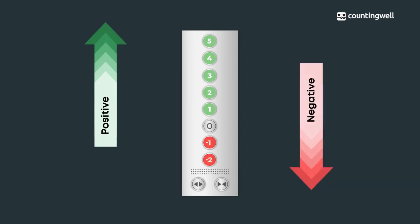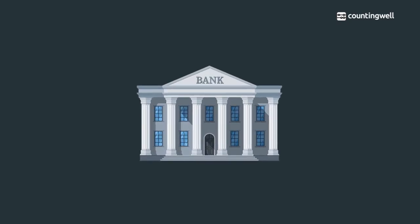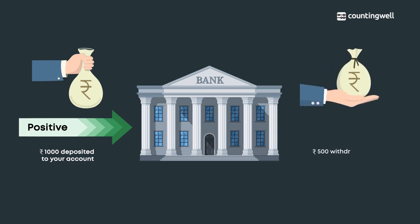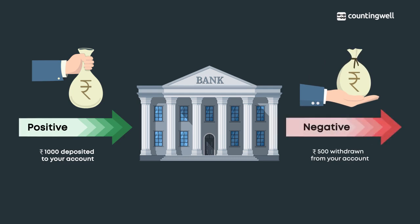Have you ever visited a bank? Depositing 1,000 rupees in your account is represented by the positive integer 1,000. A withdrawal of 500 rupees is represented by the negative integer minus 500.